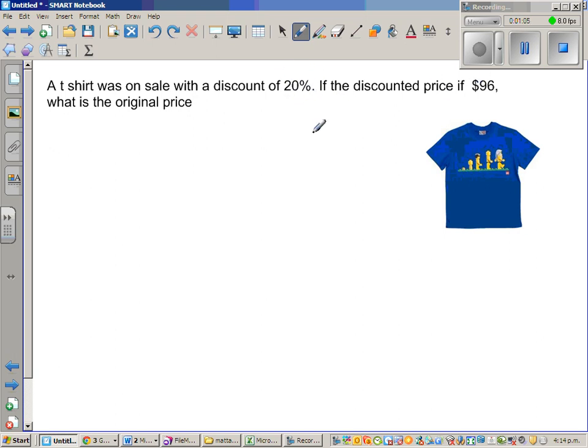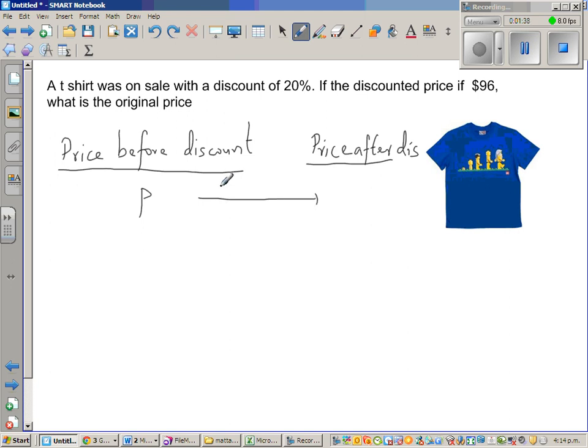Suppose if you think okay 20% was taken off and this is the price. Suppose this is the price before discount. Let us make two columns - price before discount and price after discount. There was a price P before discount and from that 20% is taken off and then you get 96.